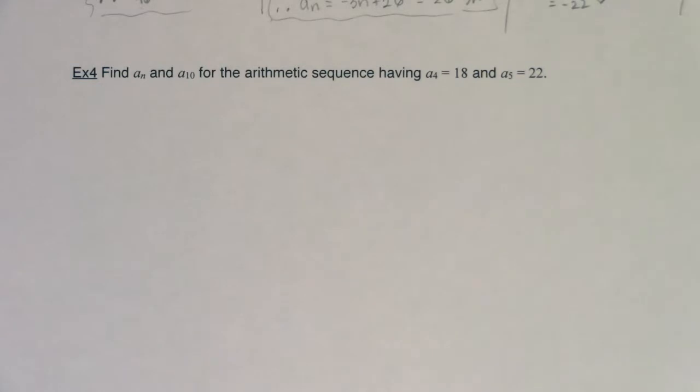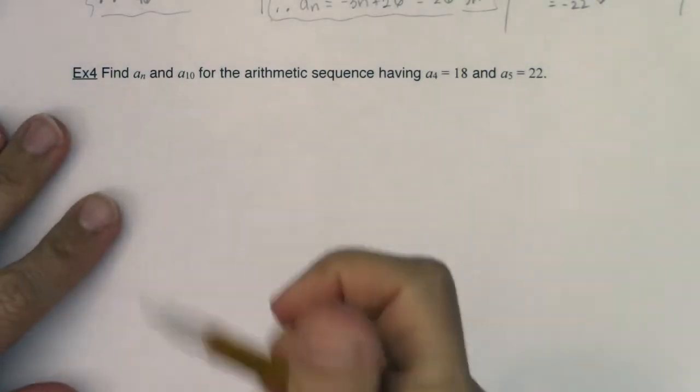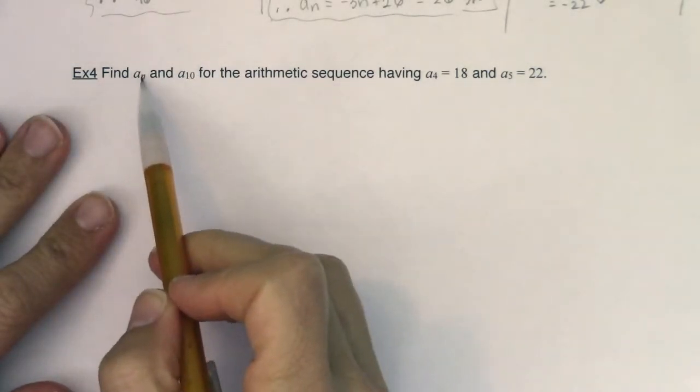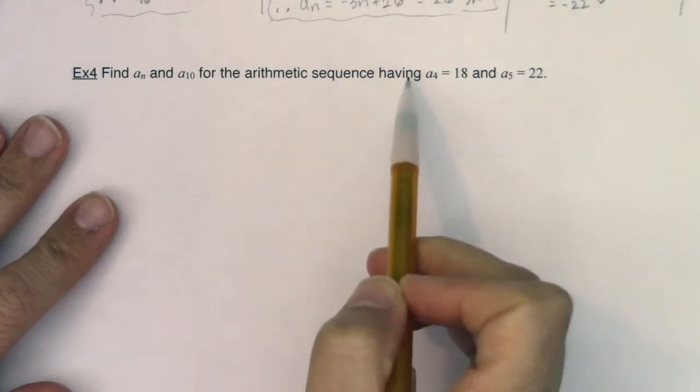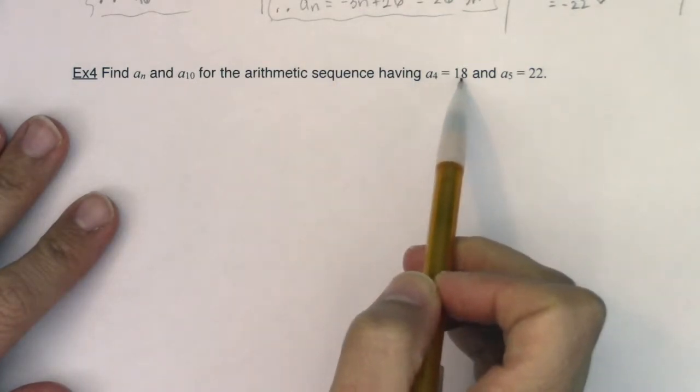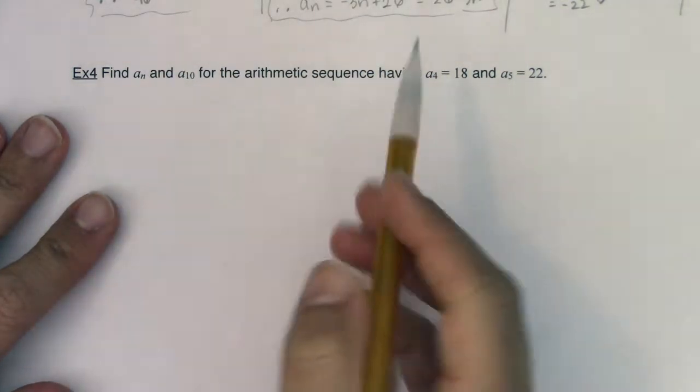Hey Math31, welcome to example four. So let's take a look. We are being asked to find a_n and a_10 for an arithmetic sequence having a_4 equaling 18 and a_5 equaling 22.